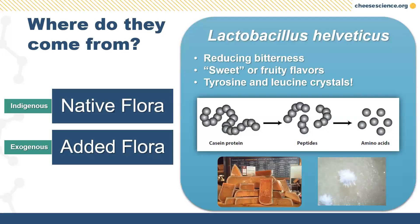Lactobacillus helveticus is a good example — often added industrially, but also naturally present in some high-cook-temperature cheeses. It's now widely added in industrial cheddar production to reduce bitterness or give sweeter, fruity flavors. The fruity flavors of parmesan or aged Swiss, and the crystals found in aged Dutch, Italian, or alpine-style cheeses, result from this organism's metabolism. It contains a boatload of proteolytic enzymes that efficiently break down casein into peptides and then individual amino acids, accomplishing debittering — and those amino acids can also crystallize out.